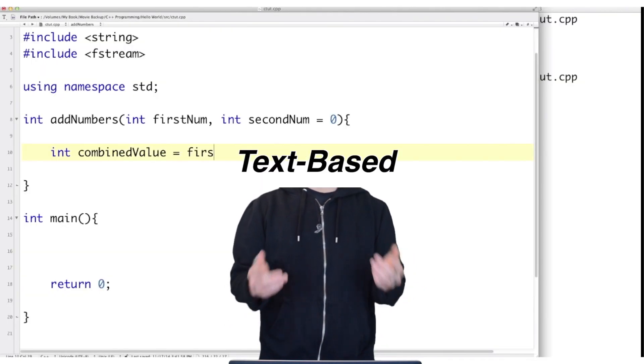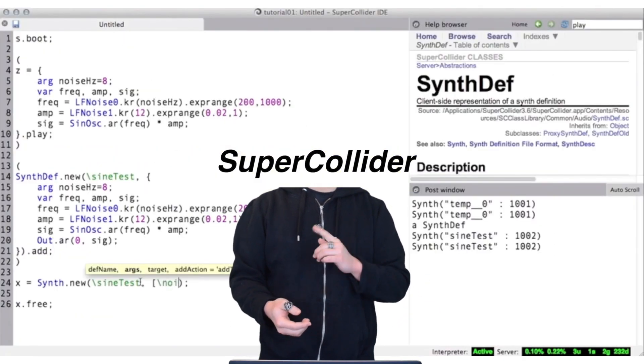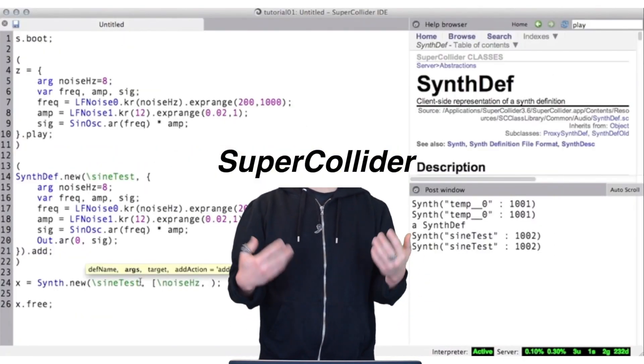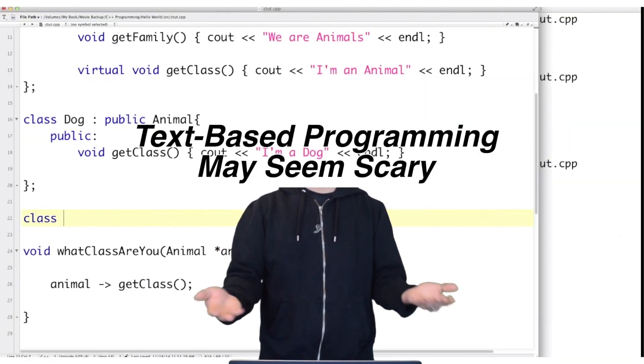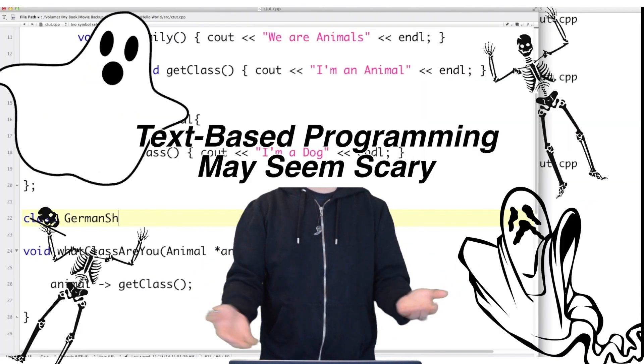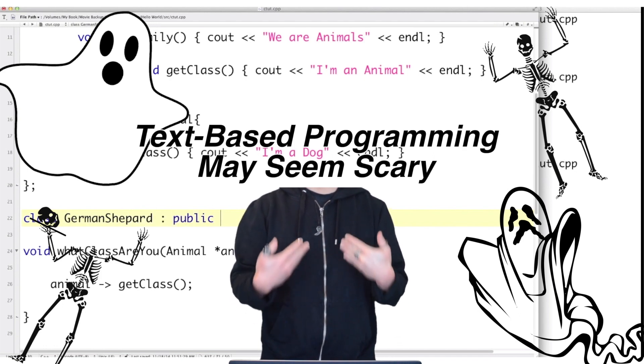Text-based programming is more of the traditional and common way to program. One of the most popular sound programming languages is SuperCollider. But you may feel that text-based programming seems a bit scary to get into. I know I was pretty intimidated when I took a programming 101 class.